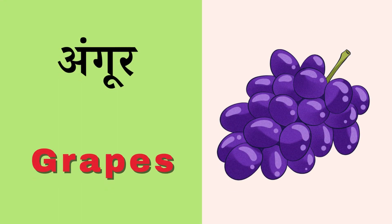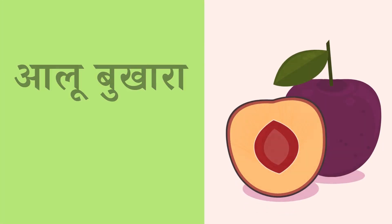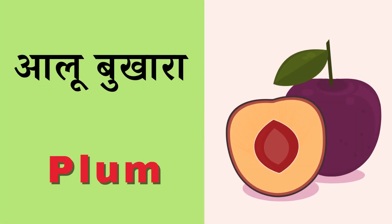Angoor means Grape, G-R-A-P-E-S, Grape. Alokhara means Plum, P-L-U-M, Plum.